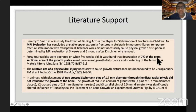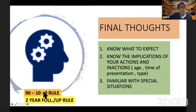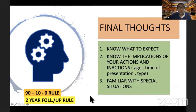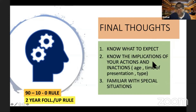Final thoughts: remember the 90-10-0 rule — apply 90% traction, 10% translation, and virtually no torsion or other force. The two-year follow-up rule: any physeal injury you detect should be followed up for a minimum of two years before concluding there are likely no growth-related issues. Know what to expect so you can diagnose and treat appropriately. Know the implications of your actions — is a violent close reduction better than leaving it alone? Can I pass a trans-physeal pin? Be familiar with special situations like triplane fractures or trapped tissue in between, to prevent further complications. Thanks a lot.